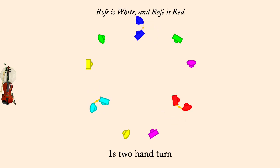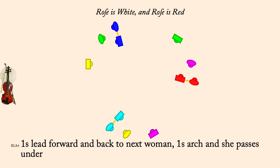Ones lead forward to next woman and back and arch. She goes through. Ones two-hand turn.